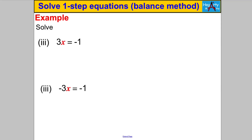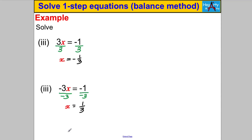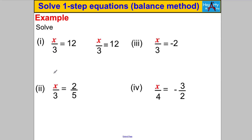For 3x = −1, divide both sides by 3: X = −1/3. A negative divided by a positive gives a negative, so leave the answer as −1/3. For −3x = −1, divide both sides by −3: X = −1 ÷ −3 = +1/3, since a negative divided by a negative is positive. Look back at your multiplying and dividing by negative numbers if that doesn't make sense.